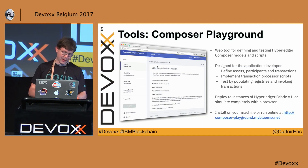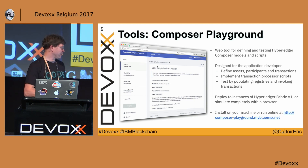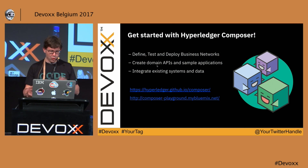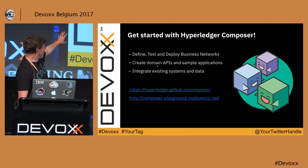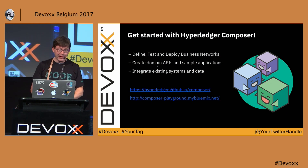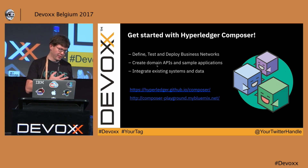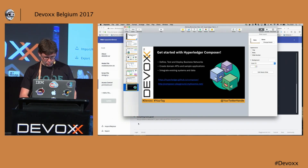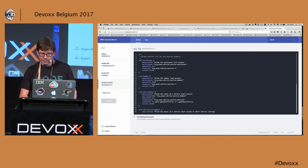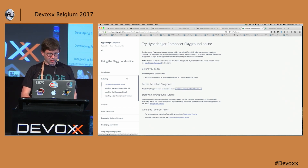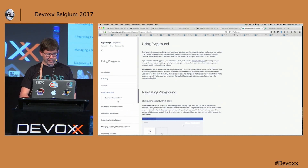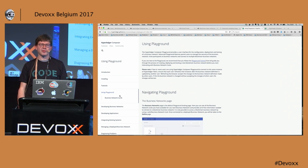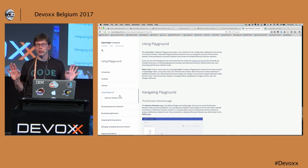That was a short introduction about Hyperledger version one and what you can do with Composer. There is of course a lot more than we could show in 15 minutes, but if you want to know more, here are some links — you can find all the code and get started. In the Hyperledger documentation there are a number of tutorials to get you started. I'll also be around at the IBM booth if anybody has longer questions.